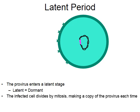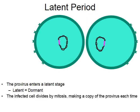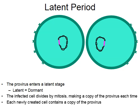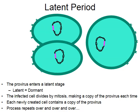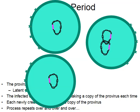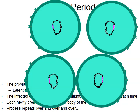During mitosis the DNA is duplicated and the cell divides into two, so there are now two infected cells when originally there was only one. Each newly created cell contains a copy of the provirus. This process happens over and over, potentially for years depending on the virus. The cell on the left divides into two more infected cells, the cell on the right does the same, for a total of four — one became two, two became four, four to eight, eight to sixteen, sixteen to thirty-two, and so on.